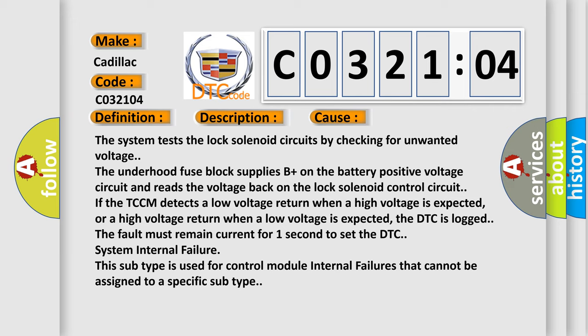If the TCCM detects a low voltage return when a high voltage is expected, or a high voltage return when a low voltage is expected, the DTC is logged. The fault must remain current for one second to set the DTC. System internal failure. This subtype is used for control module internal failures that cannot be assigned to a specific subtype.